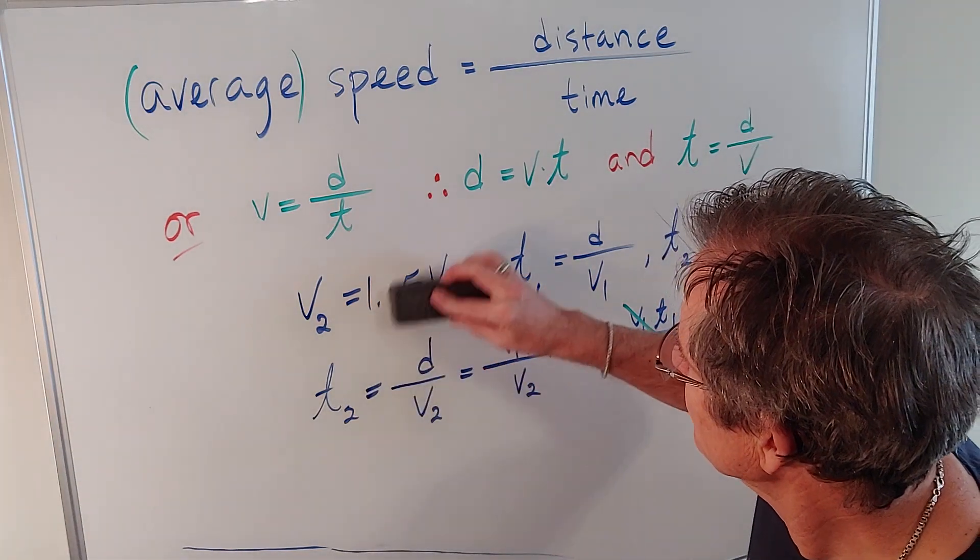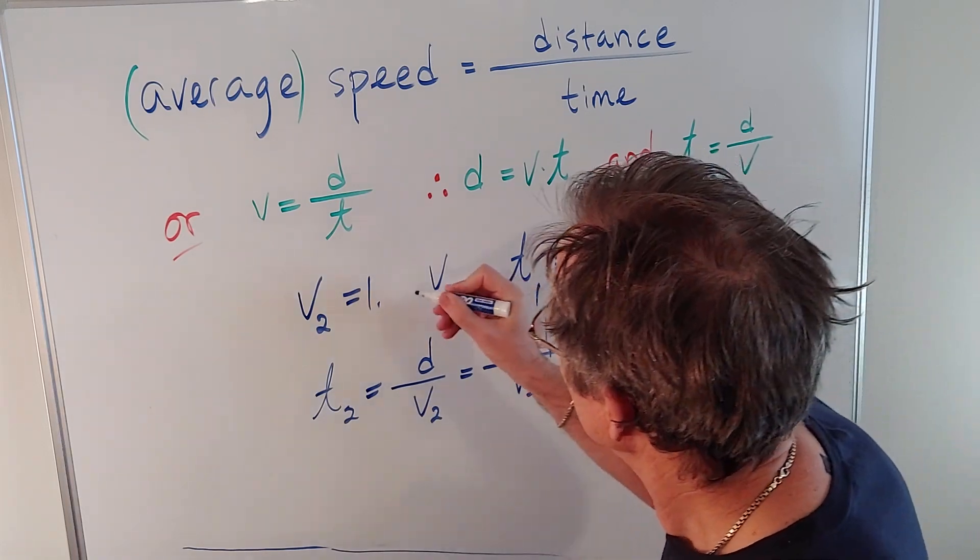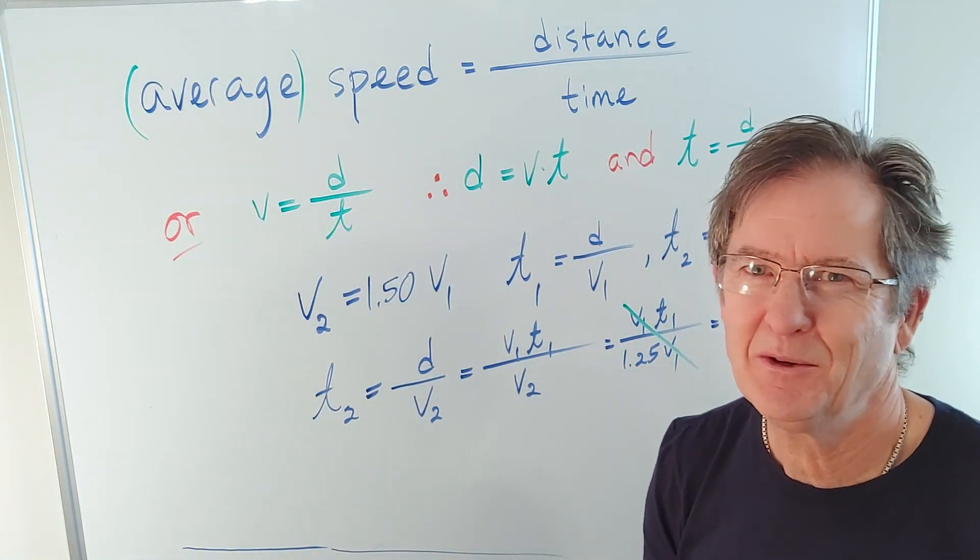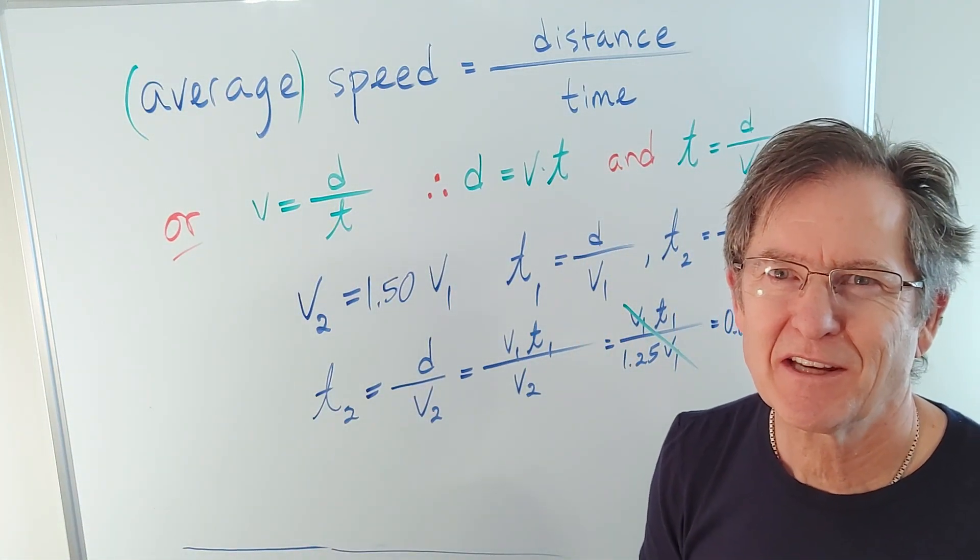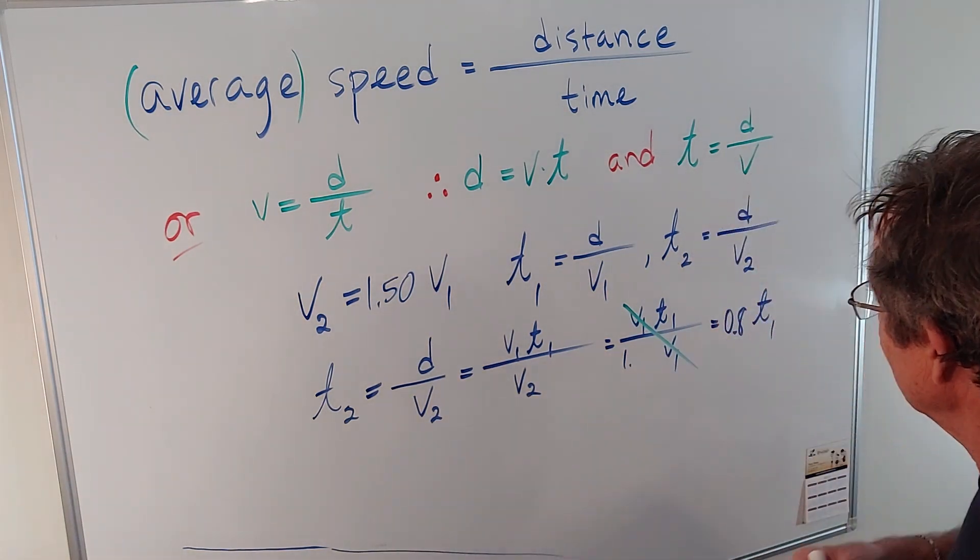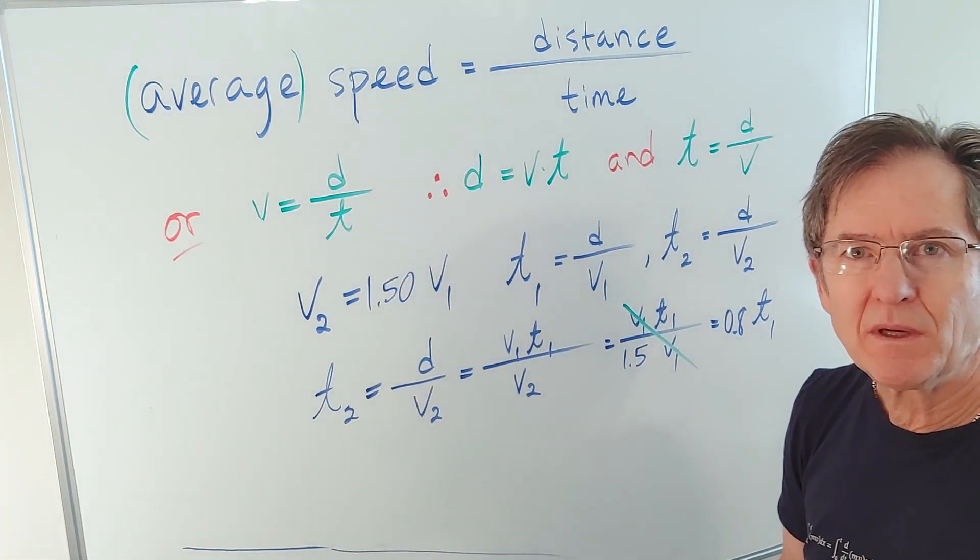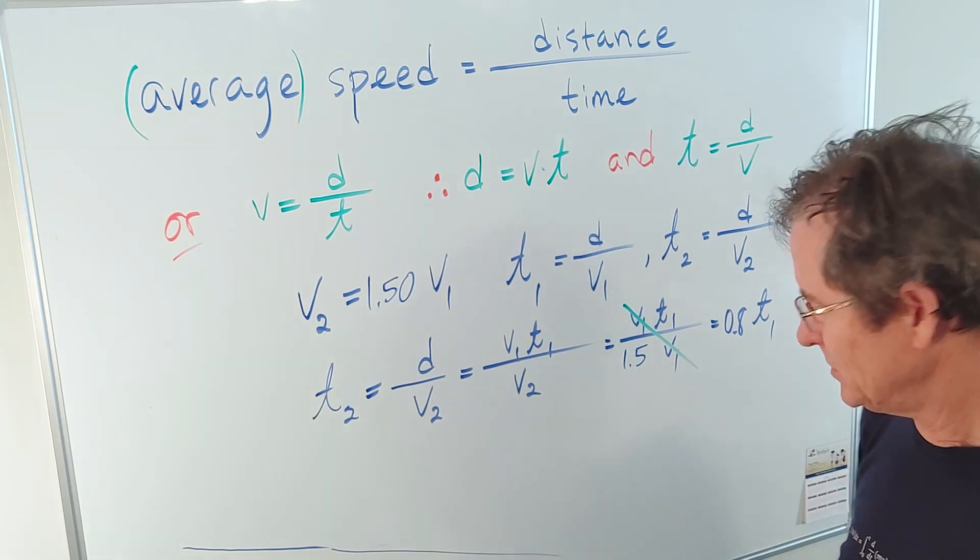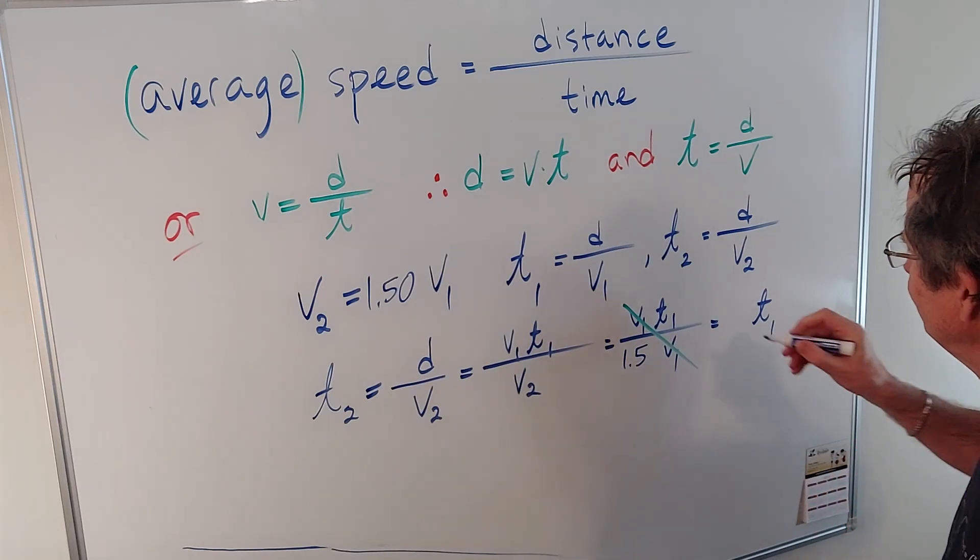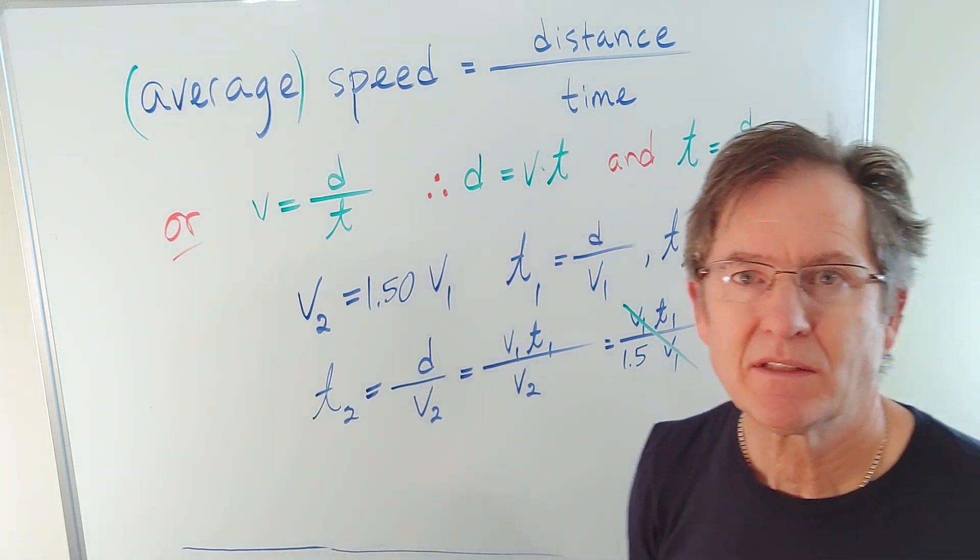Now, what if it's 50% faster? I tried this with a podcast. I thought it was too fast to listen to, but for the sake of argument, then what happens? Well, we just change this one number. 1.5 is 3 halves, so the reciprocal of that is 2 thirds. So this is 0.6 repeated, essentially 0.7. So you save a third of the time.